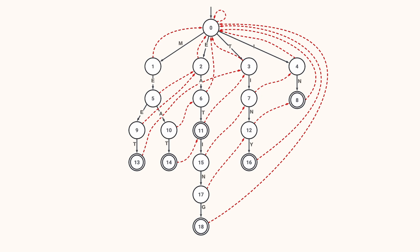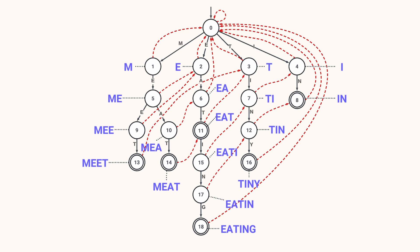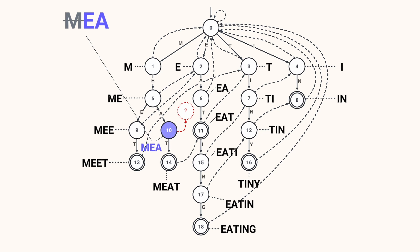I like the name 'failure links' but 'suffix links' is actually a better name — each node represents a string and the suffix link of a node points to the node representing its longest proper suffix. For example, node 10 represents the string 'MEA'; its longest proper suffix is 'EA', represented by state 6, so the suffix link of node 10 points to 6. To find the suffix link we remove the first character and simulate the automaton with the remaining letters.